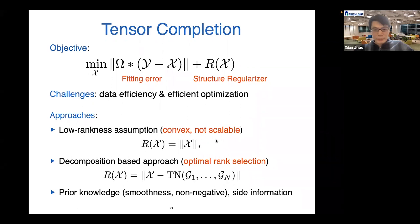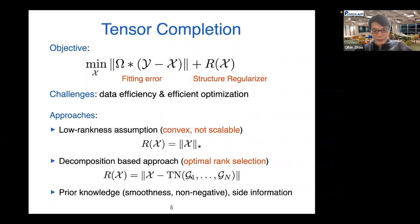The convex optimization approach is easy to optimize but not very scalable. The tensor network approach is difficult because it's hard to choose the optimal rank and to find the best tensor network structure or topology. Depending on the application, you can also use prior knowledge like smoothness, non-negativity, or information from other datasets.